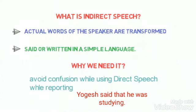What is indirect speech? In indirect speech, the actual words of the speaker are transformed. Indirect speech is said or written in simple language. Why do we need indirect speech? To avoid confusion while using direct speech while reporting. For example, 'Yogi said' is the reporting part. 'That he was studying' is the reported part. The actual words of the speaker are not spoken directly — spoken indirectly. Hence it is not put into inverted commas.